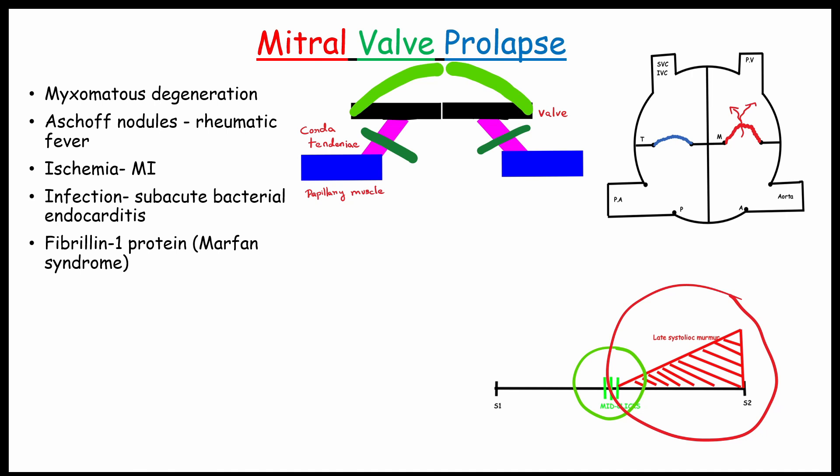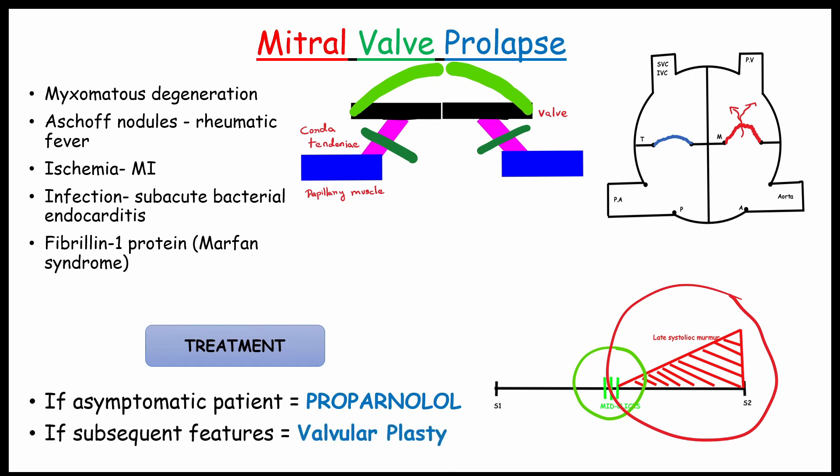Let's see the treatments. So the treatment of asymptomatic patients, we use propranolol. If the presence of subsequent features, treatment can be valvular plasty. In here, we don't treat with propranolol. Propranolol will decrease the heart rate, so it increases the longevity of the heart valve.